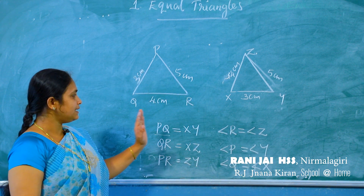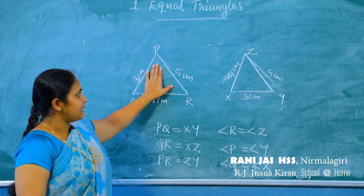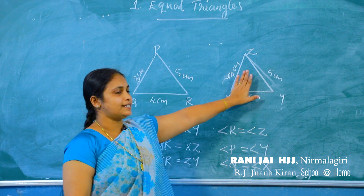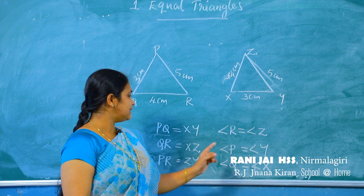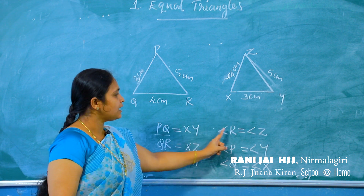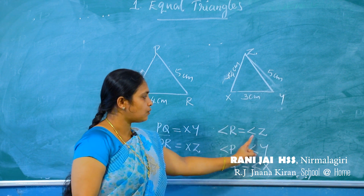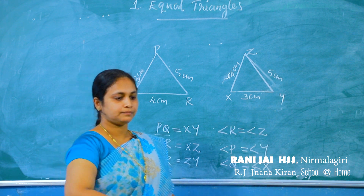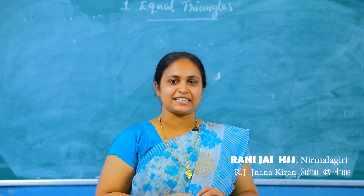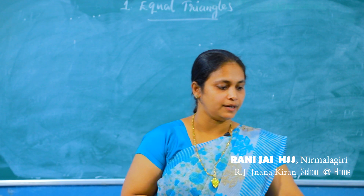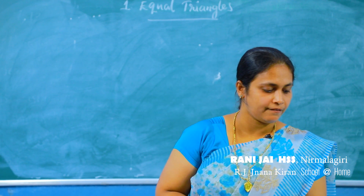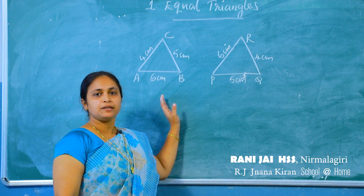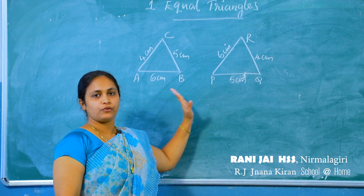That is, if all sides of a triangle are equal to all sides of another triangle, then the angles are also equal. Now, going through your textbook questions. Page number 11, first question: find the matching pairs of angles.